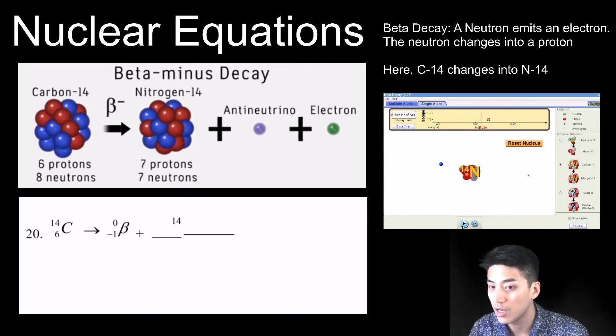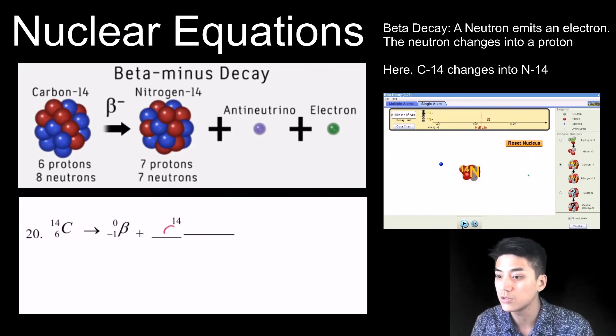But one of the neutrons becomes a proton. And you have now become seven protons, which is nitrogen.